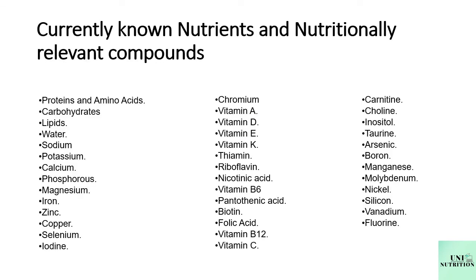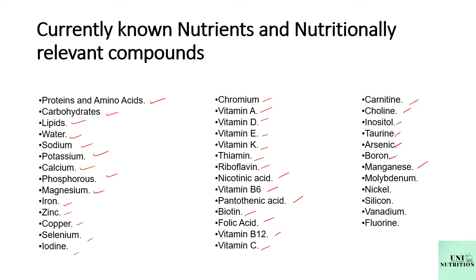These are all the currently known nutrients and nutritionally relevant compounds: protein and amino acids, carbohydrates, lipids, water, sodium, potassium, calcium, phosphorus, magnesium, iron, zinc, copper, selenium, iodine, chromium, vitamins A, D, E and K, thiamine, riboflavin, nicotinic acid, vitamin B6, pantothenic acid, biotin, folic acid, vitamin B12, vitamin C, carnitine, choline, inositol, taurine, arsenic, boron, manganese, molybdenum, nickel, silicon, vanadium, and fluorine. These are all 40 currently known nutrients and nutritionally relevant compounds.